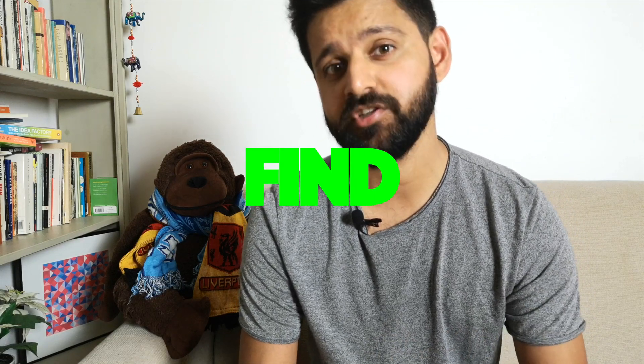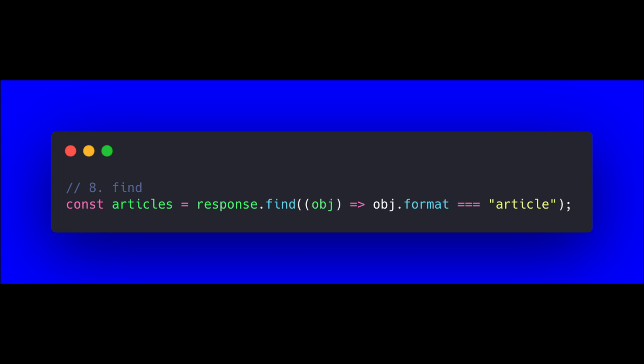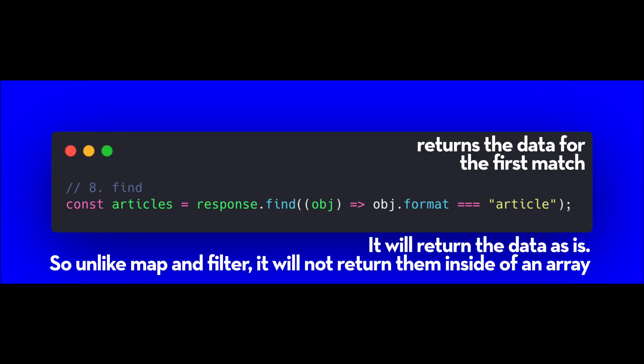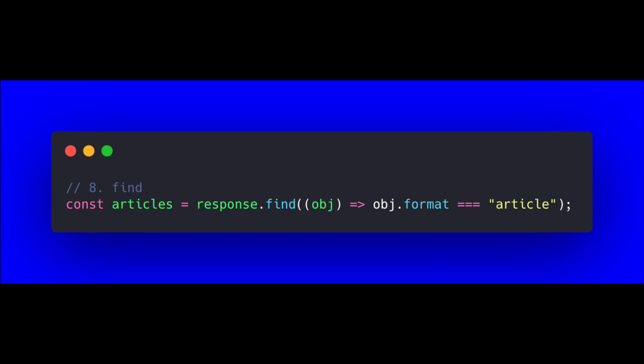Finally, the find function is useful when you're trying to find an object with a particular value. Bear in mind it will only find the first match and stop there. If you simply want the first match or know your content has only one match, use find. However, if you want to return all matching values, use filter instead. If you don't know how many matches you'll have but want to return them all, use the filter function.